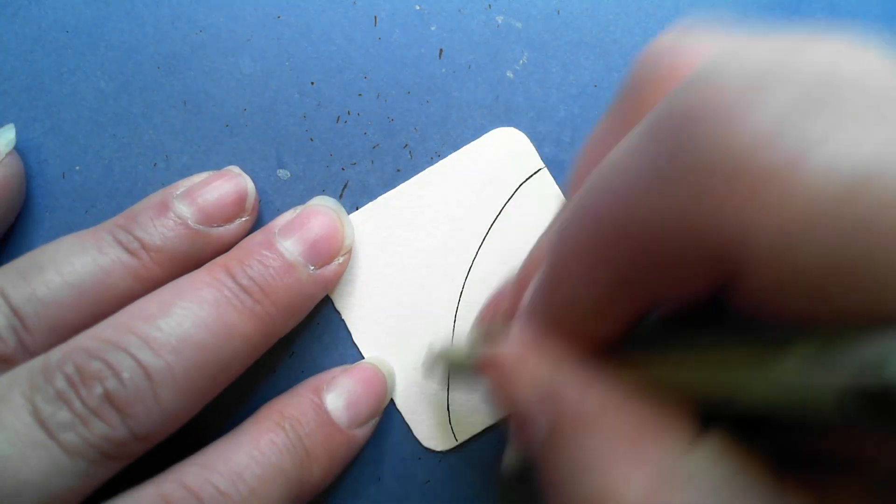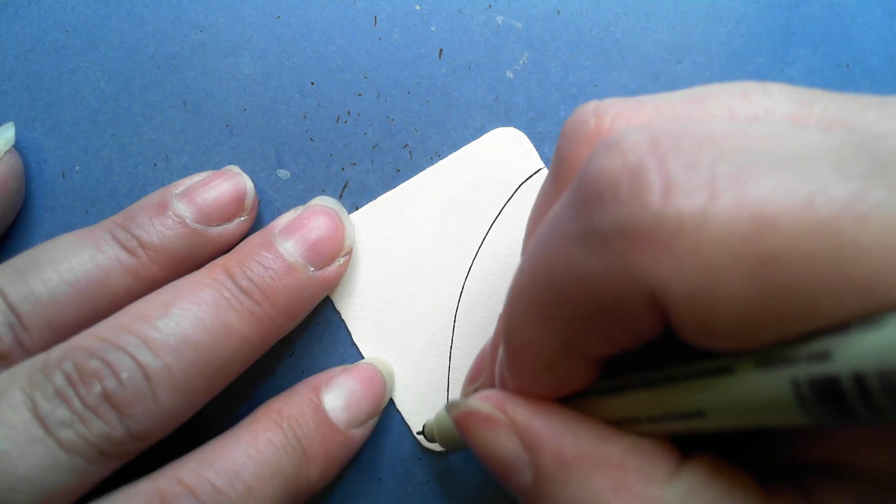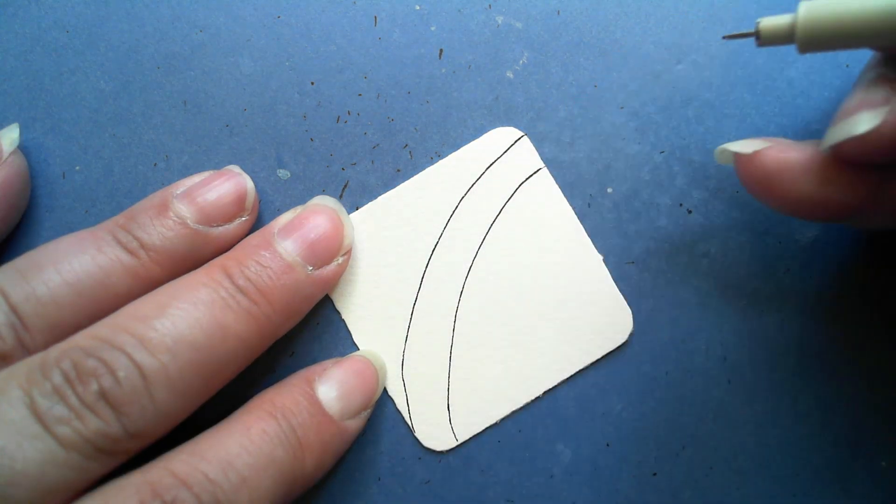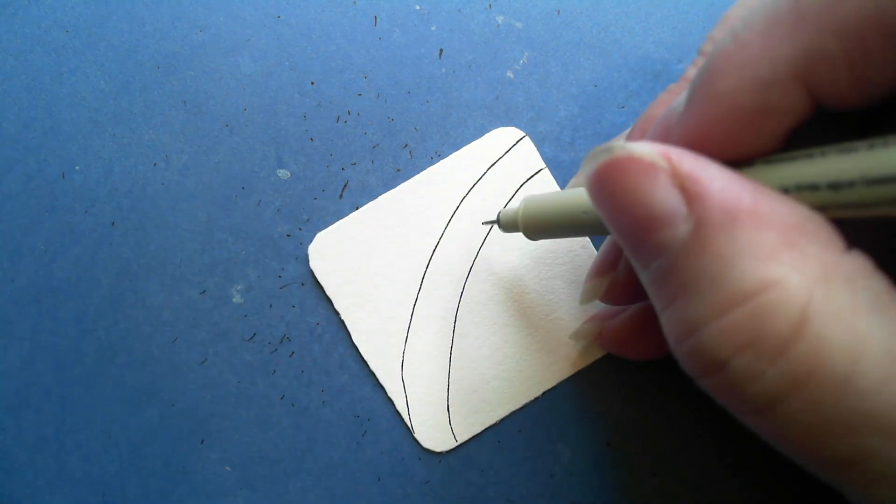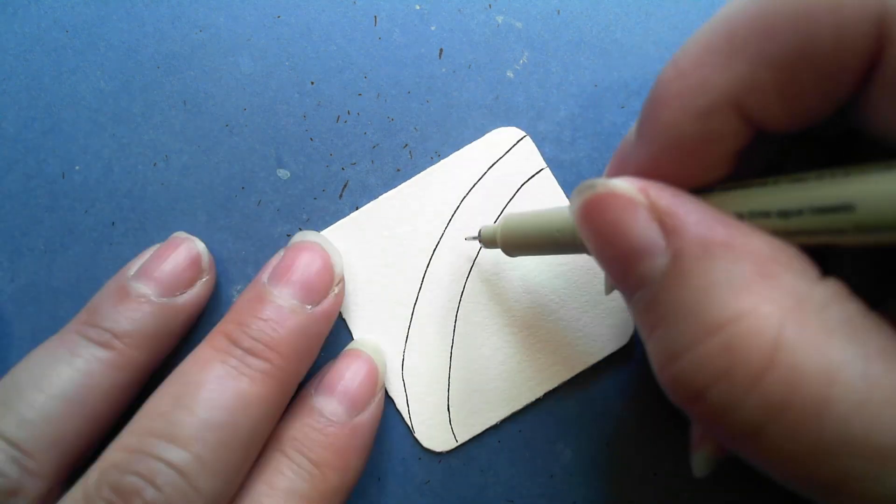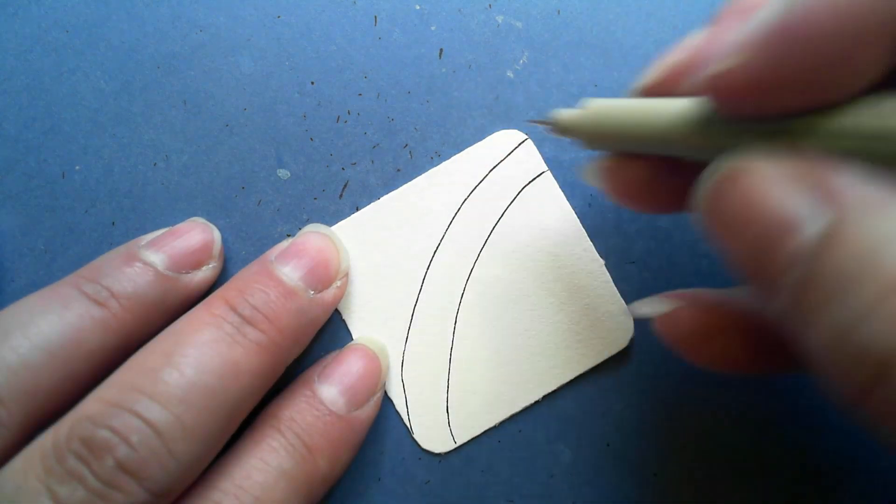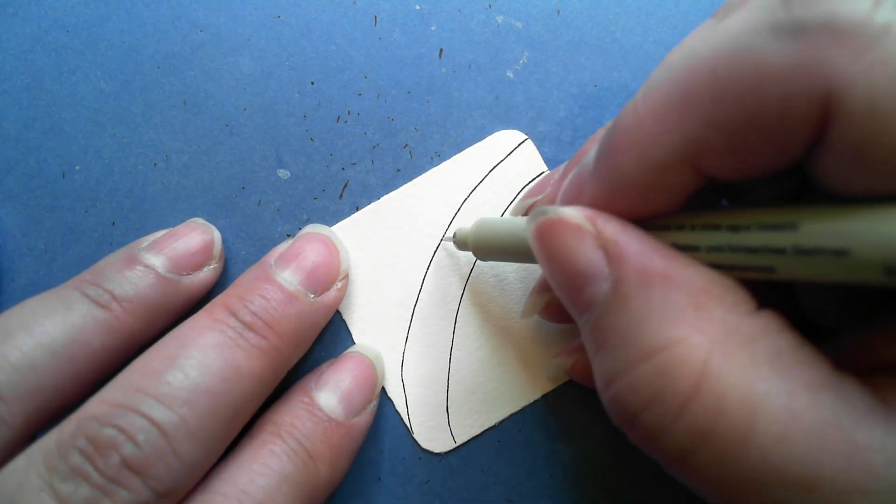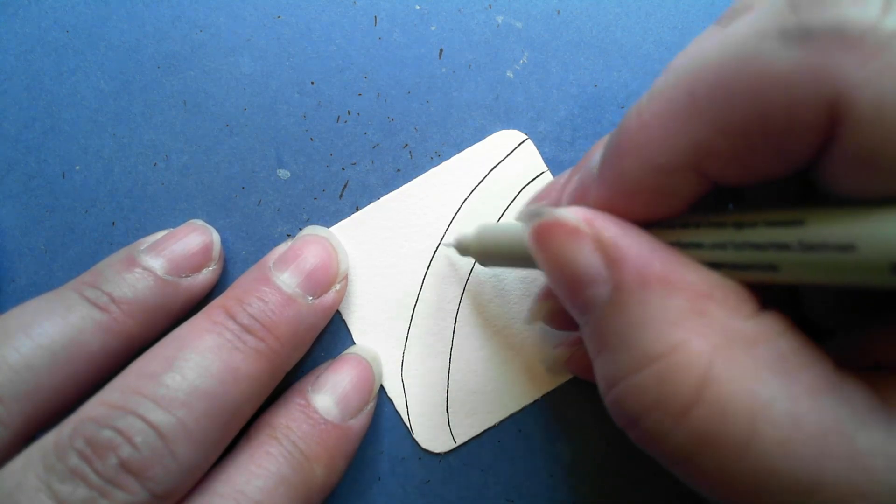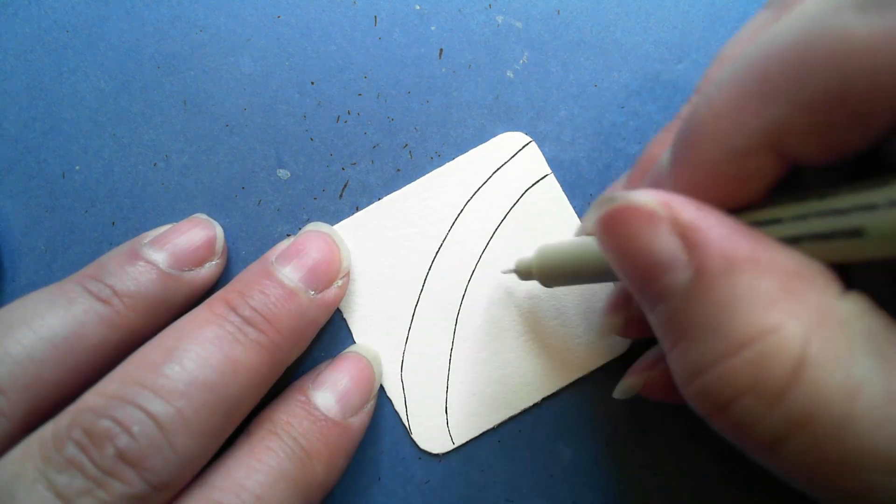This one starts with a curved line however you want to curve it. I kind of just did an arc. Then we're going to aura that, and you can aura it in either direction. This is going to become a platform in the end look of it.